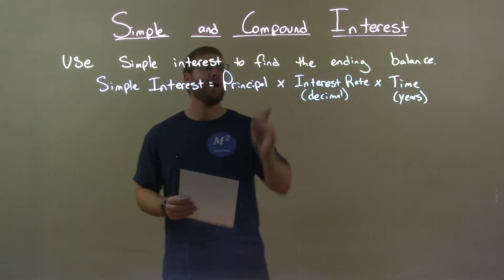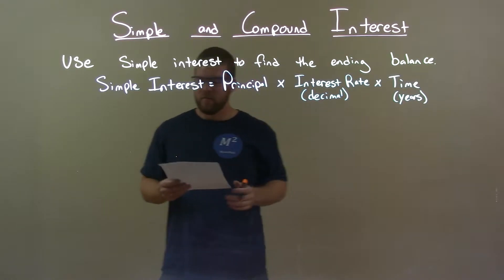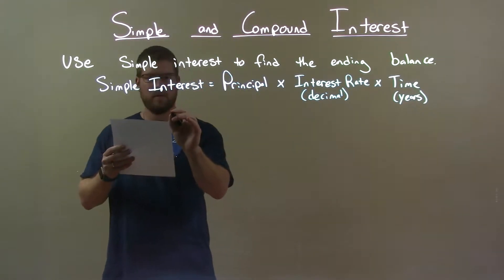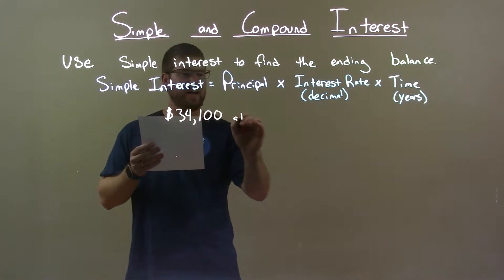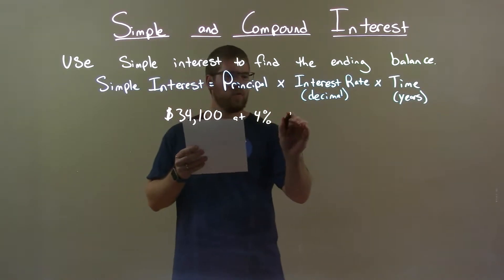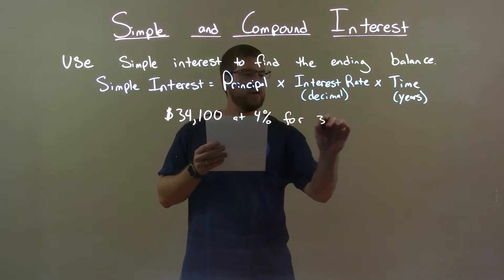Use simple interest to find the ending balance. If I was given this problem: $34,100 at 4% for 3 years.